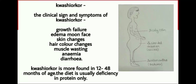Signs and symptoms of kwashiorkor disease: growth failure, edema, moon face, skin changes, hair color changes, muscle wasting, anemia, and diarrhea. Kwashiorkor is more commonly found in children aged 12 to 48 months.